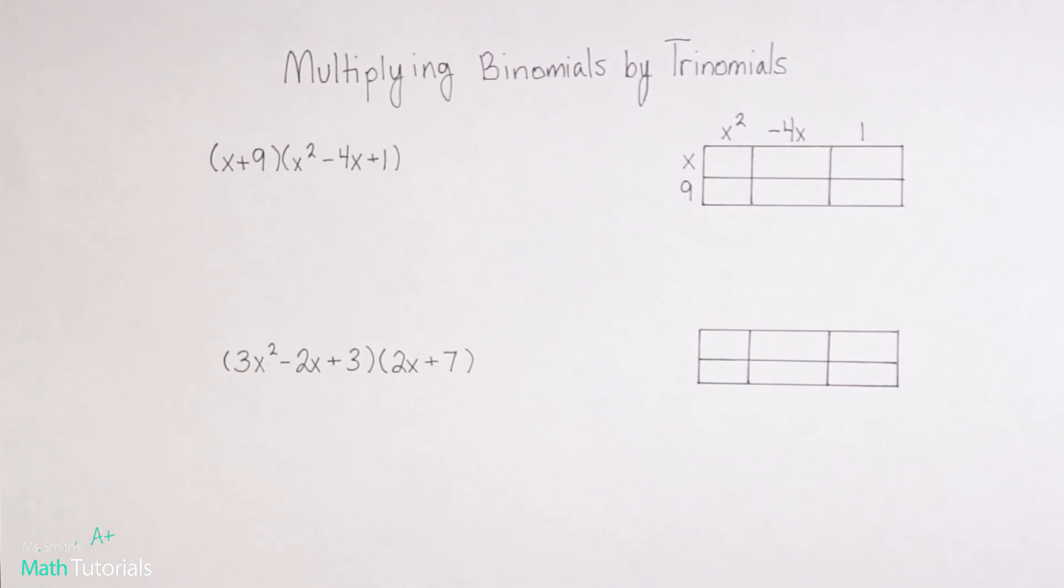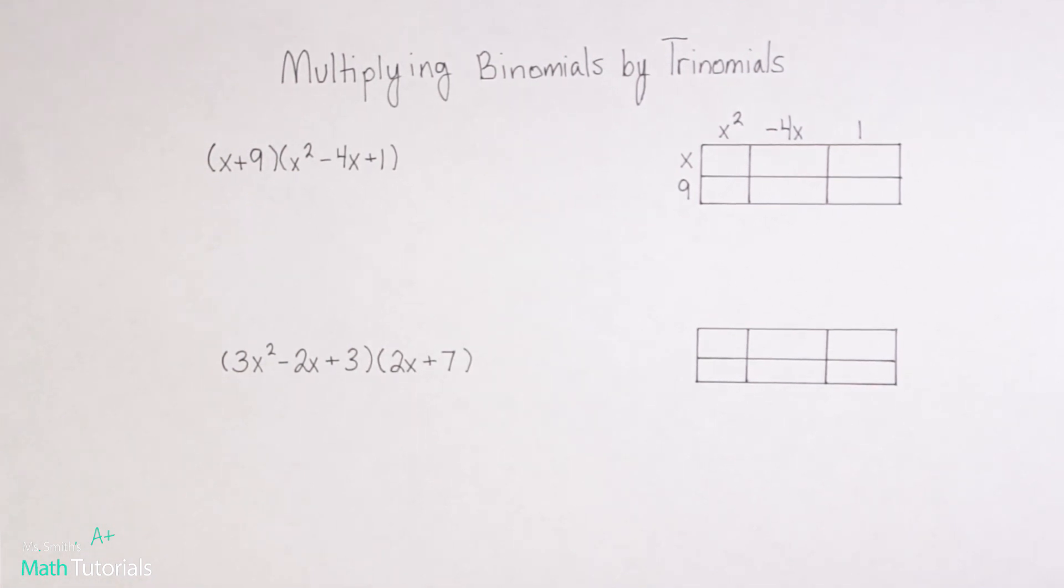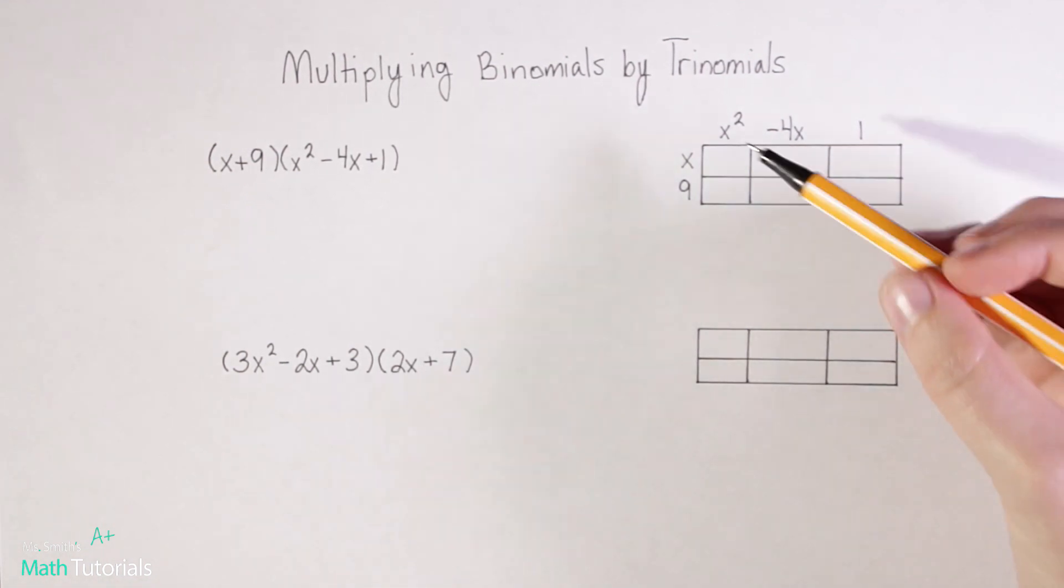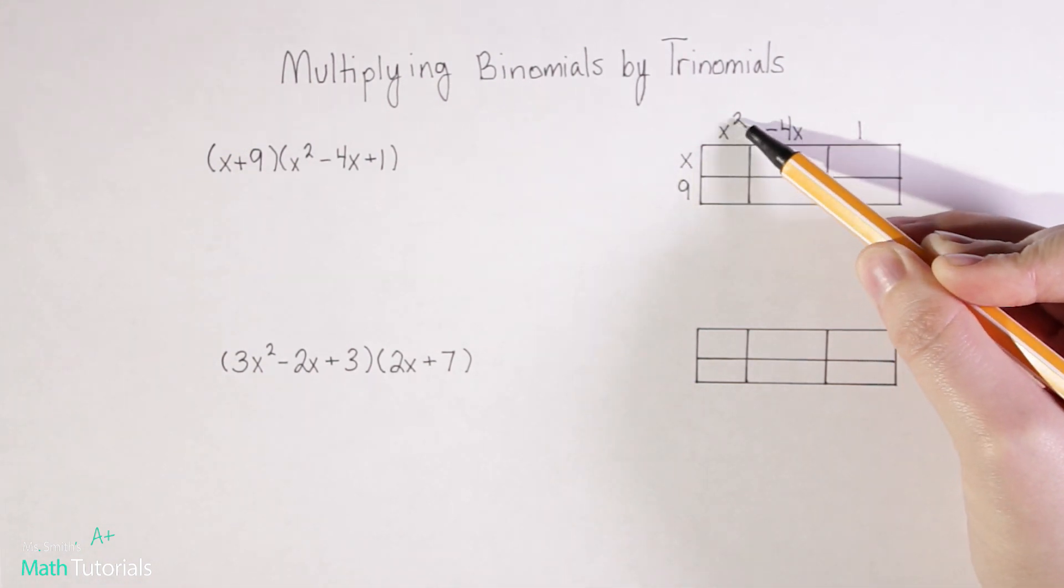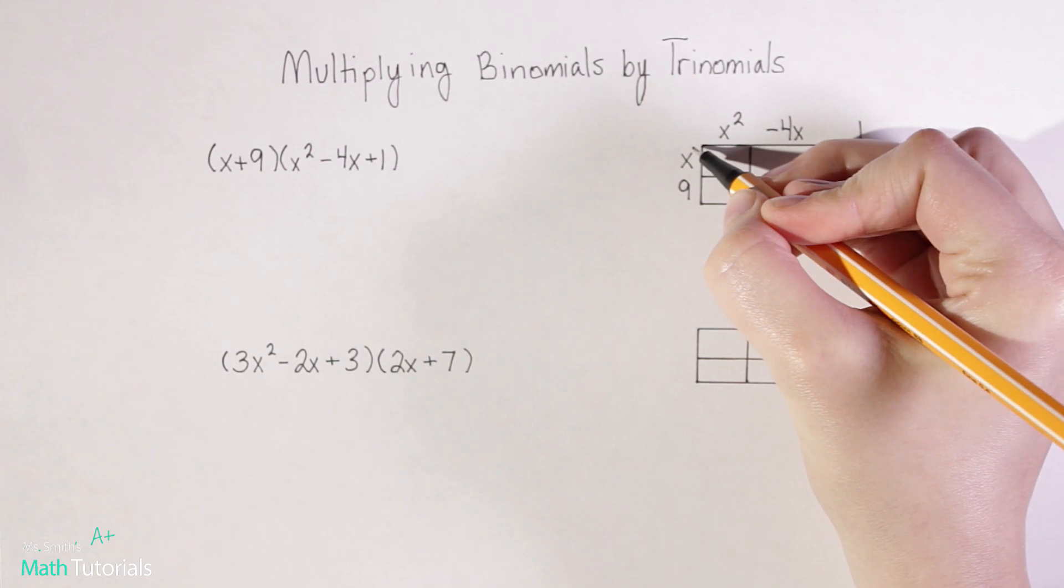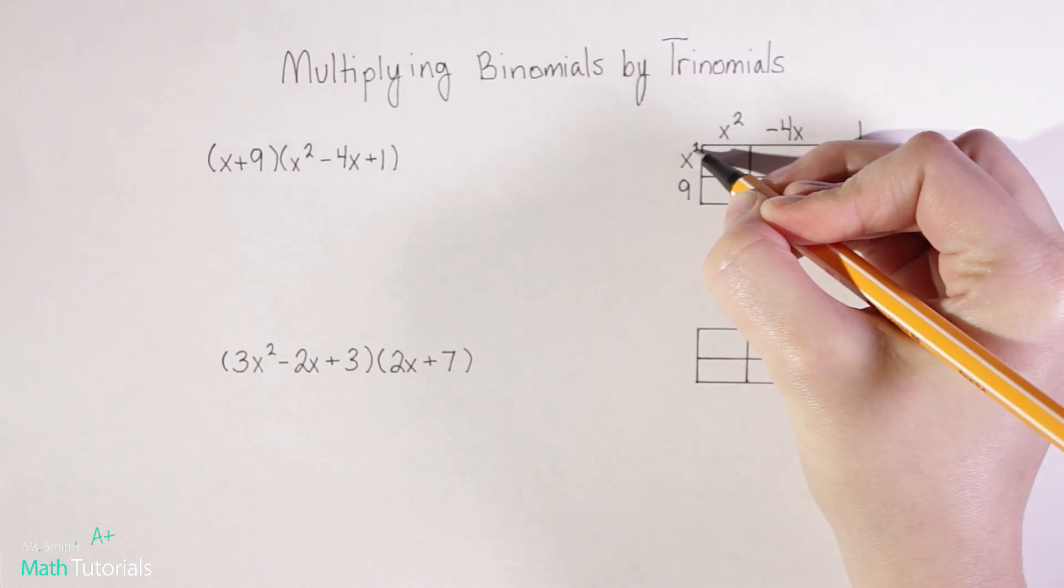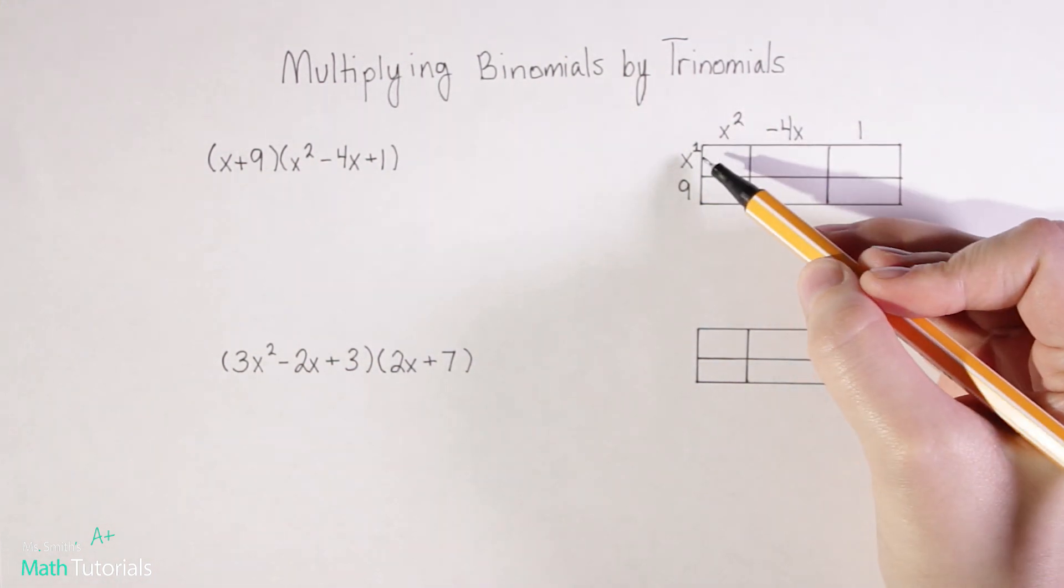So what we want to do now, and this works the same as a Punnett square does in biology, but basically we want to take this x and multiply it by this x squared. Now remember this x has an understood exponent of one, and we're multiplying here.